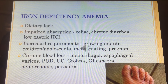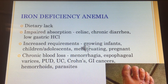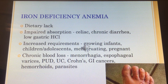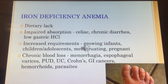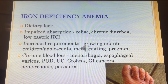Iron deficiency anemia, as you know, is the most common anemia. You see it for all sorts of reasons: heavy menstrual bleeding, internal bleeds from ulcerative colitis or Crohn's disease — ulcers in the digestive system. Crohn's disease can actually go anywhere in the GI tract, so it can cause a vitamin B12 deficiency too because it can affect the small intestine, which is where B12 is absorbed.